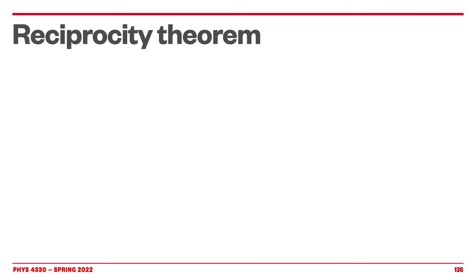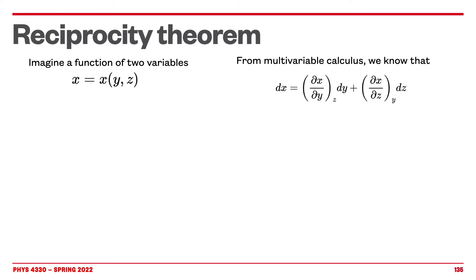So, reciprocity theorem. As you know, when we talk about differential equations and that kind of things, we come up very often with differentials. We are going to imagine a function of two variables. Everything I'm going to say here is going to be a function of two variables — of course, we can expand this to many variables. Imagine that you have a function x which depends on two variables y and z. As we know from elementary calculus, we can calculate the element dx, which involves the partial derivative of x with respect to y and the derivative of x with respect to z. The subscript means that those partial derivatives are calculated keeping the other variable constant — for example, dx over dy at constant z means that we keep z constant.